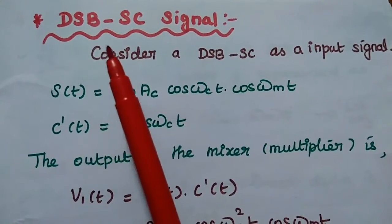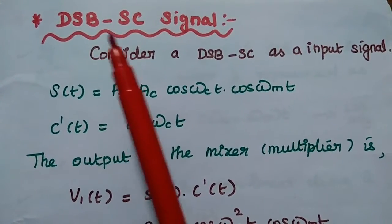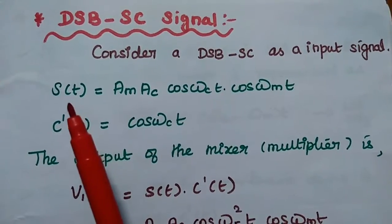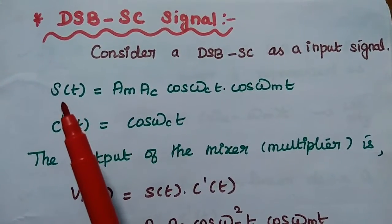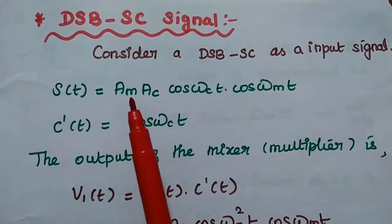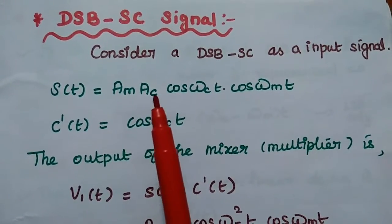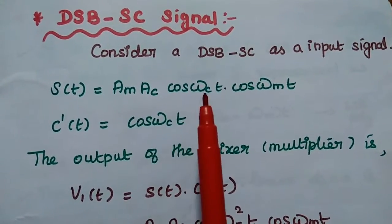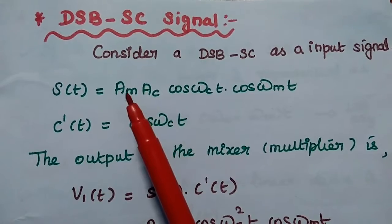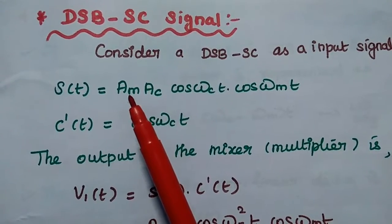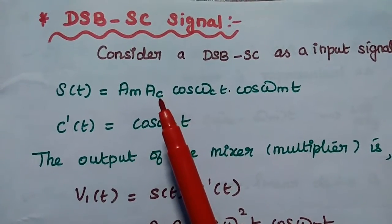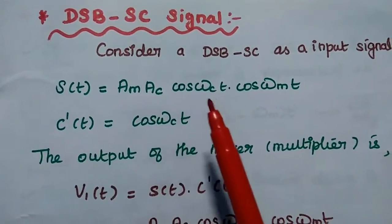Analysis of synchronous detector: if the input signal is double sideband suppressed carrier signal, then the received signal S(t) is equal to A_M · A_C · cos(ωC·t) · cos(ωM·t). Here A_M is the amplitude of the modulating signal and A_C is the amplitude of the carrier signal.